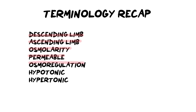Osmoregulation is the regulation of water through salts. Many people don't understand that you have to regulate the salt first before you can regulate water. It's also important to watch the video on how ADH and aldosterone function, as they are the two main hormones that regulate water and salt — those videos are already up on the playlist. Finally, hypotonic refers to a solution low in solutes but high in water, while hypertonic means the solution is high in solutes but low in water.